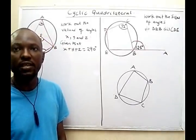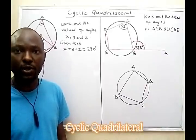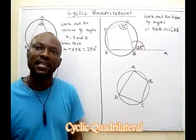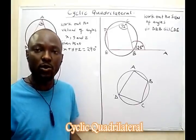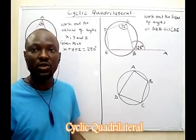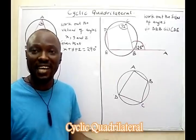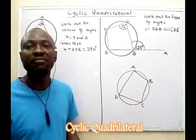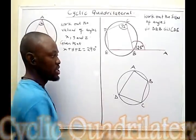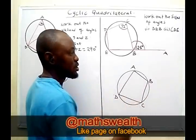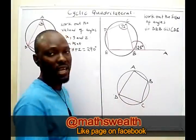Today we will be considering the cyclic quadrilateral circle theorem. The theorem states that the sum of the opposite angles of a cyclic quadrilateral adds up to 180 degrees. A cyclic quadrilateral is identified when you have a quadrilateral inscribed in a circle — so this shape here is a cyclic quadrilateral.